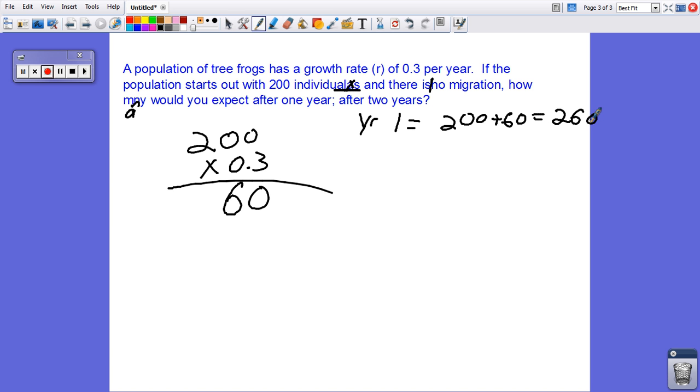Now in year two, you want to figure out how many there are. 260 times 0.3. So take your new population size, because now you have not just 200 individuals reproducing. You've got 260. So multiply them times 0.3 and get 78.